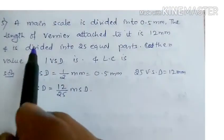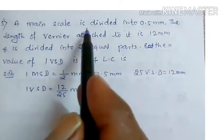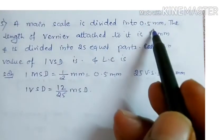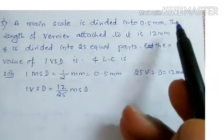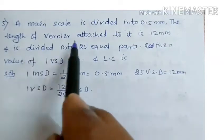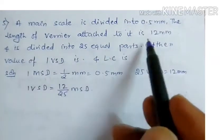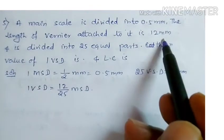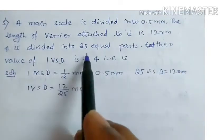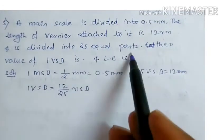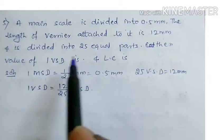Now check this. A main scale is divided into 0.5 mm. The length of the vernier attached to it is 12 mm and is divided into 25 equal parts.